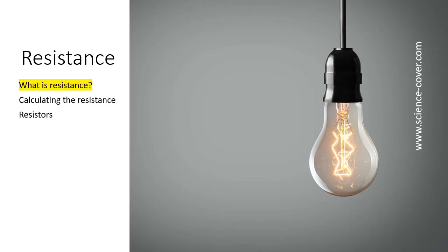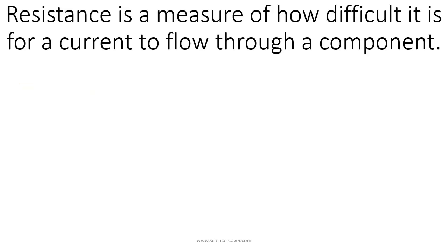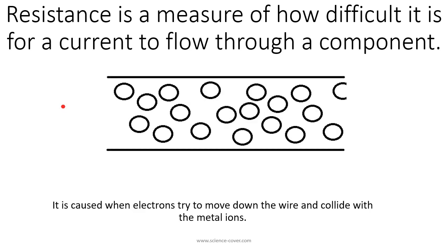Let us begin by looking at what we mean by resistance. Resistance is a measure of how difficult it is for a current to flow through a component. It's caused when electrons try to move down the wire but collide with the metal ions. A metal ion is the atom that the metal itself is made out of, but they lose their outer electrons and therefore take on a positive charge, so we call them metal ions. When the electron tries to move down the wire it collides with these ions, so they slow down the electron.